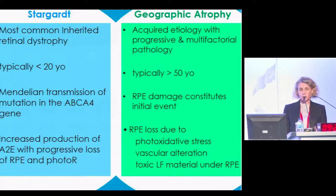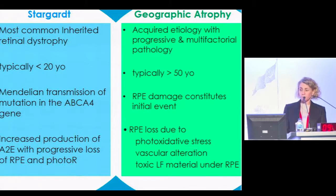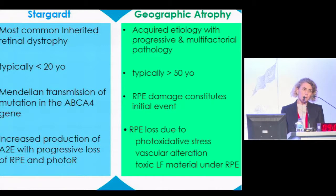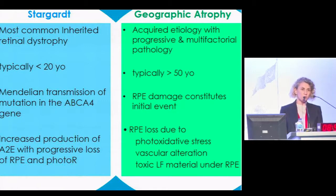Geographic atrophy in AMD can be of acquired etiology. The progression is multifactorial — typically patients are more than 50 years old. The RPE damage constitutes the initial event, and then there is RPE loss, which can be due to photo-oxidative stress, vascular alteration, or the accumulation of toxic lipofuscin material under the RPE.